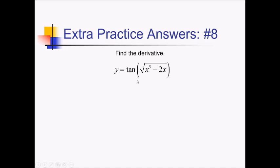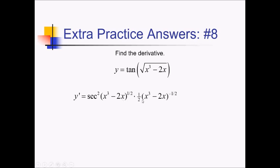To take the derivative of this function, I'm going to have to use the chain rule. My outer function is tan of something, so the derivative of that would be secant squared of something — in this case, secant squared of x cubed minus 2x to the one-half power. Now I need the derivative of the next function in, which is all of this to the one-half: derivative of something to the one-half is one-half times the something to the negative one-half. And finally, the derivative of x cubed minus 2x is 3x squared minus 2 — just make sure you have parentheses around that. And we're done.